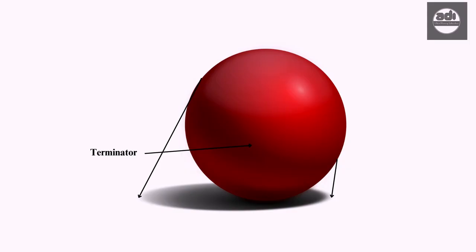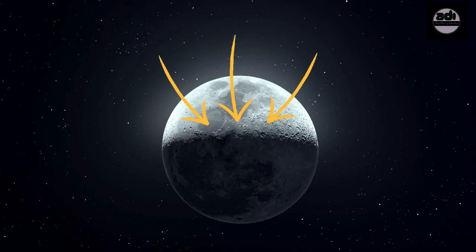The terminator determines the shape of the cast shadow. Note, the shadow line is the edge on the form that separates light from shadow.